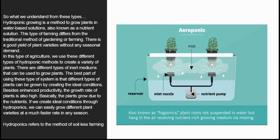Last but not least is the aeroponic hydroponic system. Aeroponic is probably the most high-tech type of hydroponic gardening. Like the NFT system, the growing medium is primarily air — the roots hang in the air and are misted with nutrient solution. The mistings are usually done every few minutes. Because the roots are exposed to air, like the NFT system, the roots will dry out rapidly if the misting cycles are interrupted. A timer controls the nutrient pump, except the aeroponic system needs a short-cycle timer that runs the pump for a few seconds every couple of minutes.